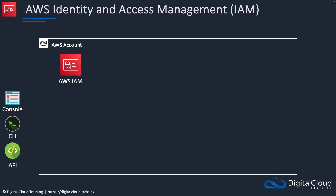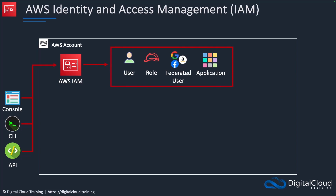Here we have an AWS account with AWS IAM. There are different ways that we can manage AWS: we've got the console, we've got the command line interface, and the API through SDKs. Through IAM, we can create things like users and roles, we can use federated users, and we can enable authentication for applications as well.